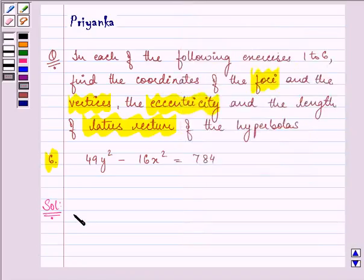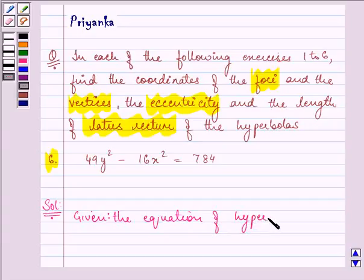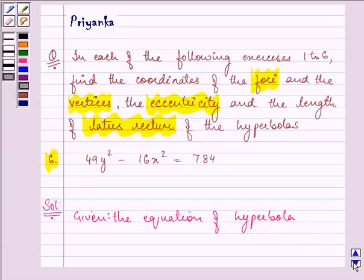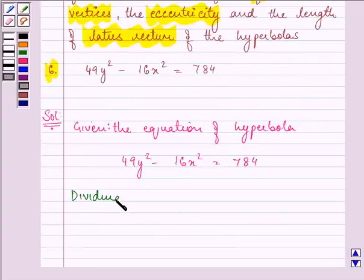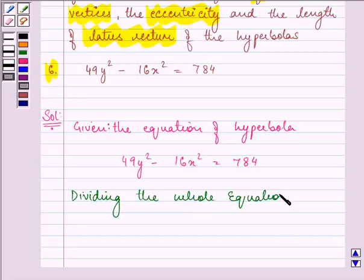So, let us proceed on with the solution. Here, given the equation of hyperbola is 49y² - 16x² = 784. Now, on dividing the whole equation by 784,